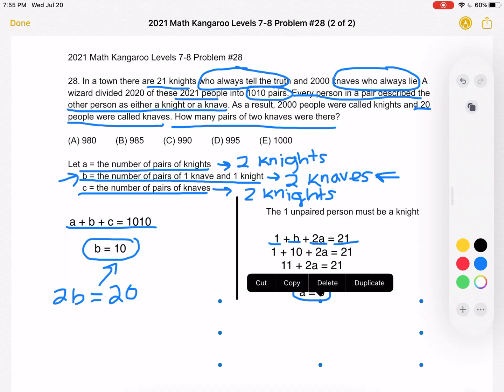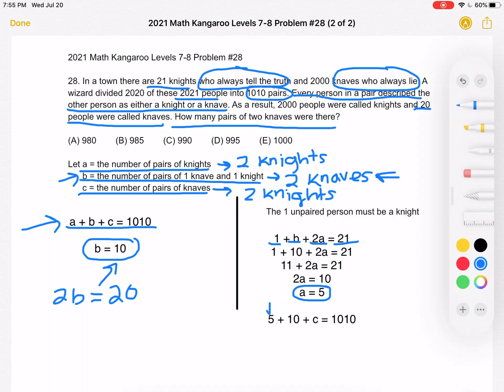Now we can figure out what C is. Because we already established that A plus B plus C equals 1010. So we can substitute 5 for A, 10 for B, and then we have 5 plus 10 plus C equals 1010. Combine to get C plus 15 equals 1010. Subtract 15 to get that C equals 995, and that is answer choice D.